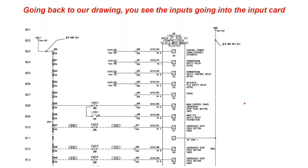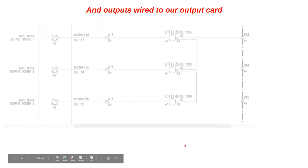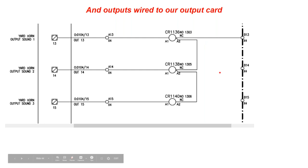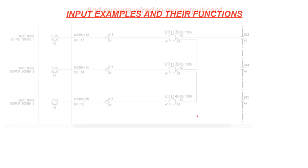Going back to the drawing, you can see various PLC inputs — an emergency stop, push buttons, and other input types wired into the input card to tell the PLC what's going on. Then there are outputs — relay coils coming from the PLC output card that might turn on a horn or other device.